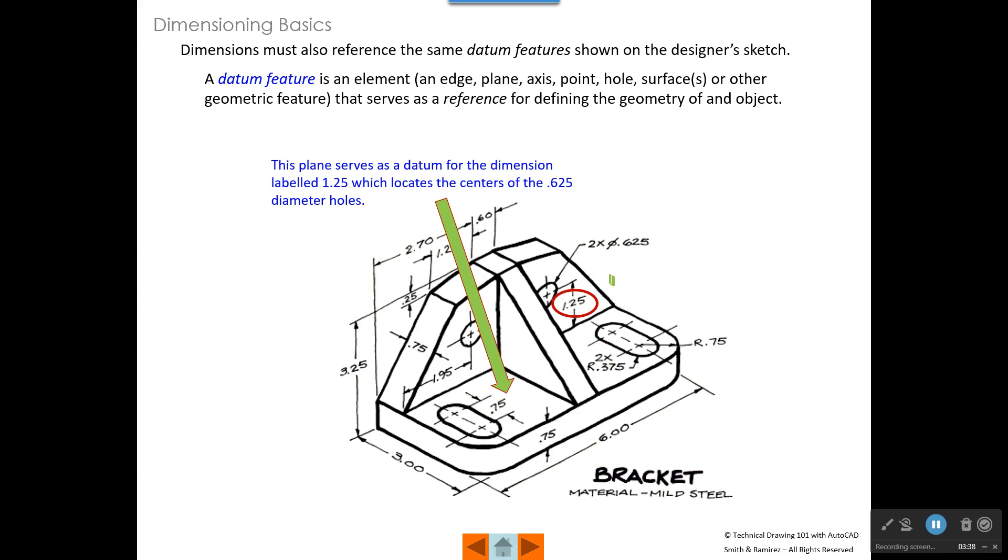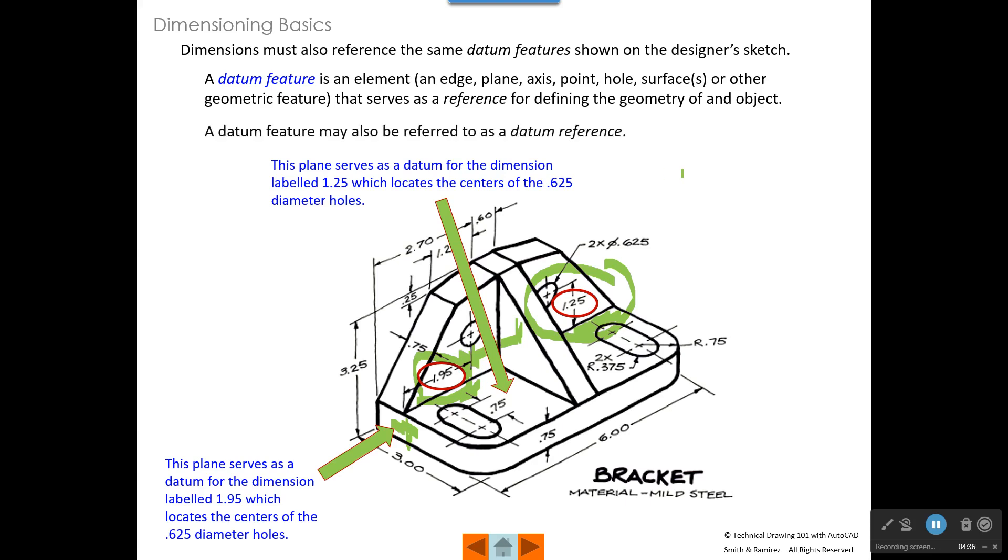For example, the height of this hole right here is 1.25 inches above this plane right here on the designer sketch. So when we dimension the 1.25, we need to also put that dimension from this plane here. This dimension, the 1.95 tells us how far it is from this surface to the center of this hole right here. And it's the same on each side. So when we dimension this part, we want to make sure that we dimension from this edge to the center of that hole. We don't want to dimension from this edge to the center because the designer didn't do that. The designer is locating these holes from a known edge and there may be a mating part that has to assemble with this. And it's important that those dimensions are taken from the same edge or datum reference feature. So pay attention to that.